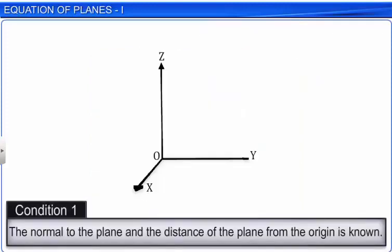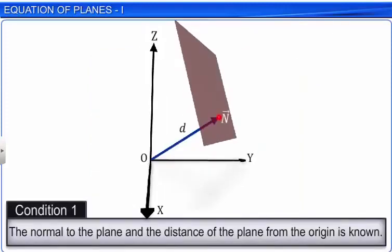We can determine a unique plane if we know the normal vector n to the plane and the distance d of the plane from the origin. The equation of the plane in this case is called the normal form of the plane.